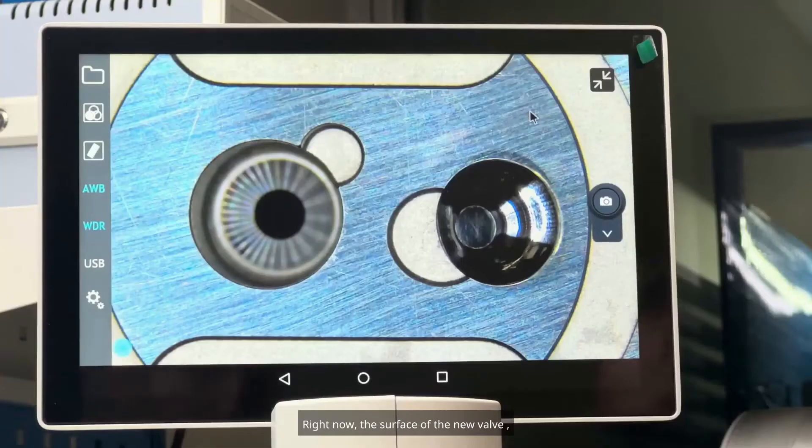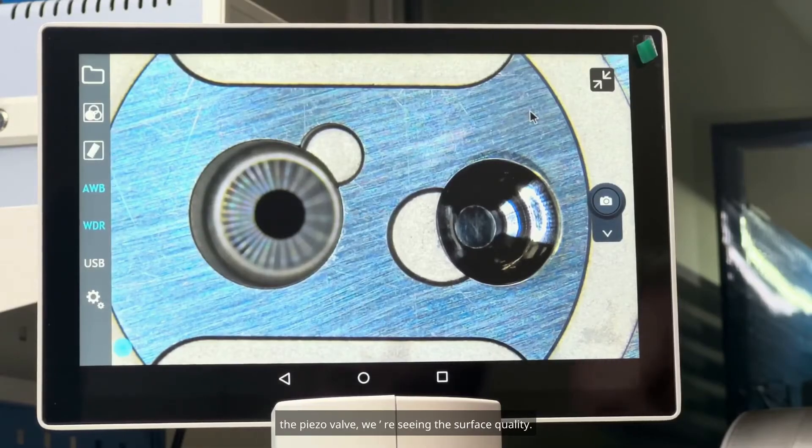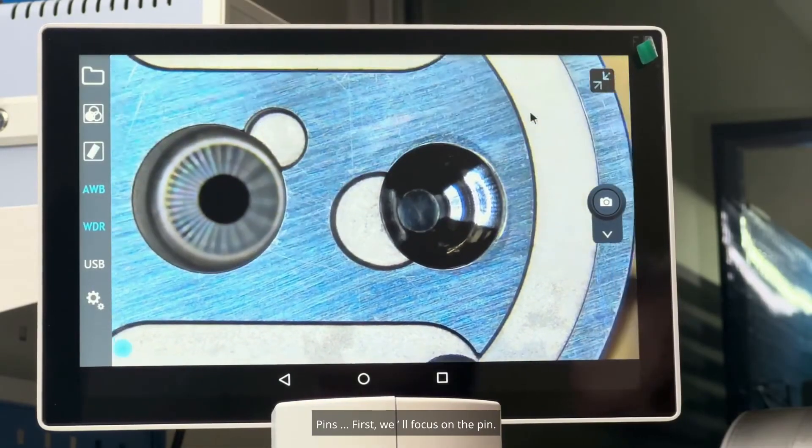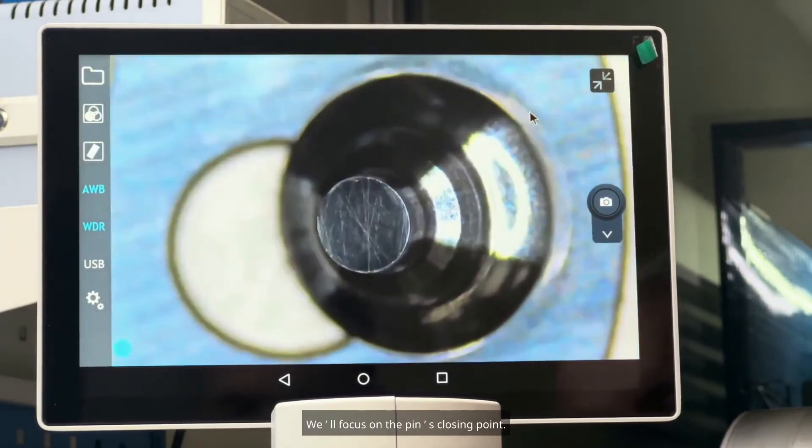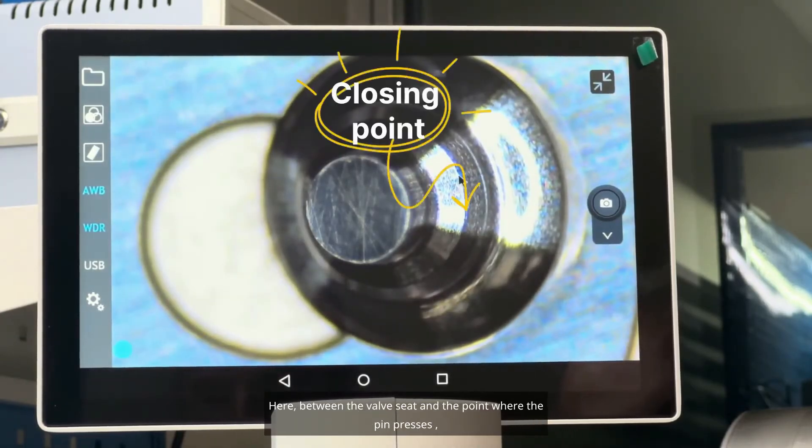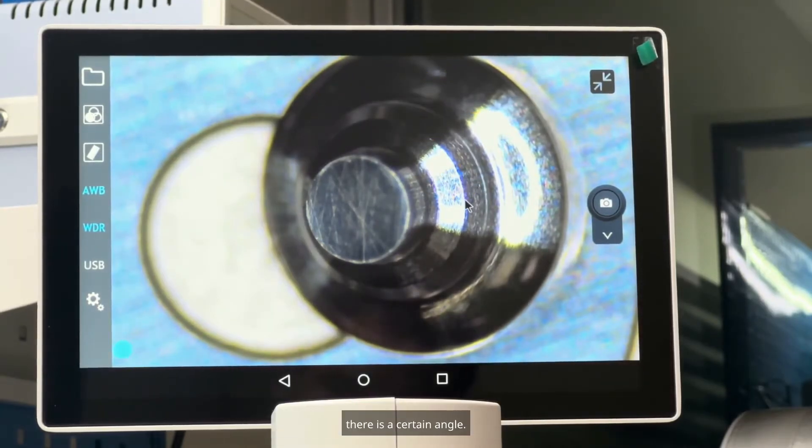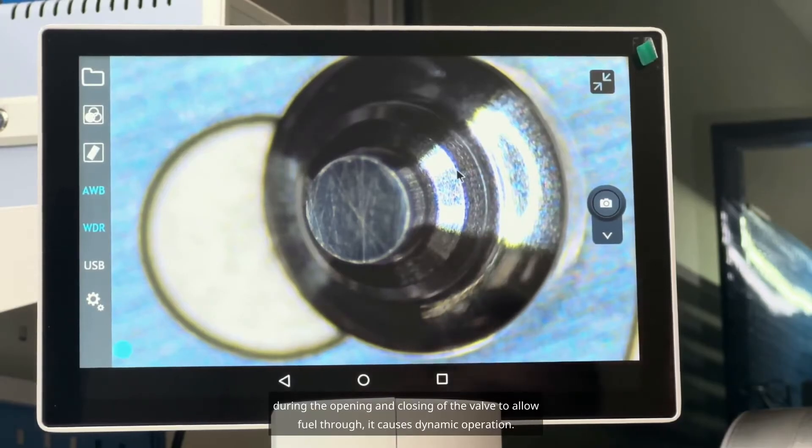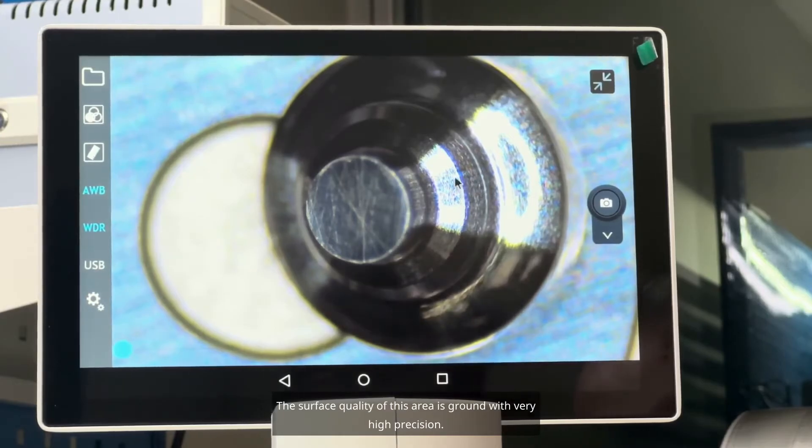Now this, under the microscope, we'll examine the fine details of the pin and the seat grinding. Right now, the surface of the new valve, the piezo valve, we're seeing the surface quality. First, we'll focus on the pin. We'll focus on the pin's closing point. The exact closing point of the pin is right at this edge contour, the sharp edge. Here, between the valve seat and the point where the pin presses, there is a certain angle. It applies point pressure. The valve applies point pressure here during the opening and closing of the valve to allow fuel through.